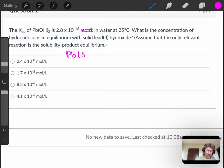So this is Pb(OH)2, and it's a solid. Ksp then has the ions on the product side.